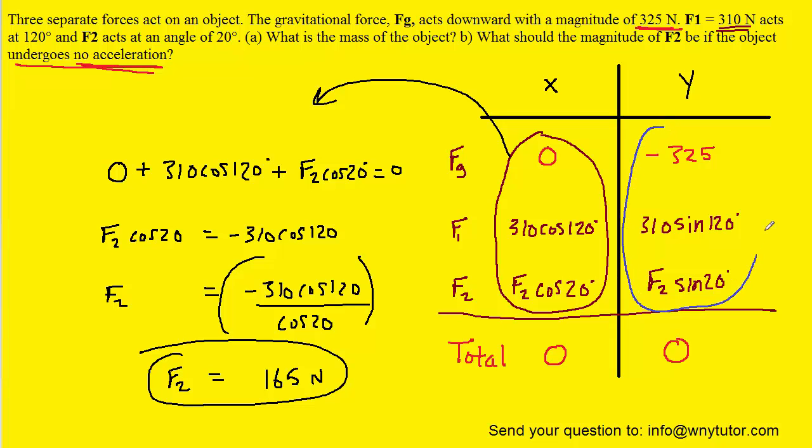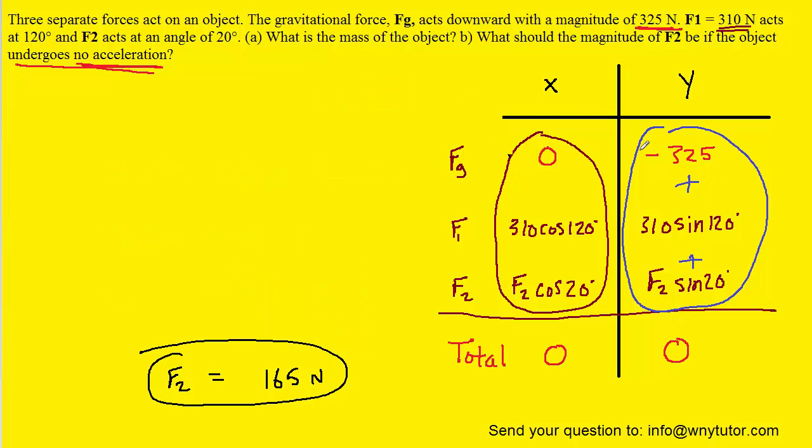Notice by the way that you could have also solved for the magnitude of F2 by adding the y forces together and setting them equal to zero. Let's quickly show that. And so we'll come over here, we'll take the first y force and we'll add it to the second y force and then add it to the third one and we'll set it equal to zero.